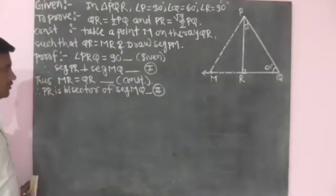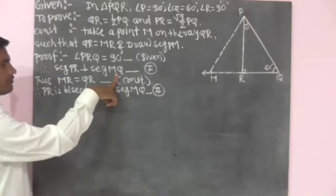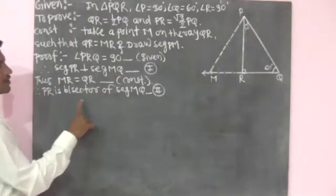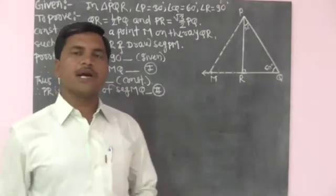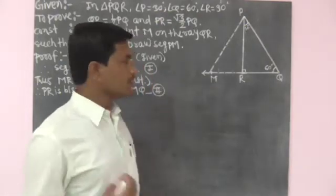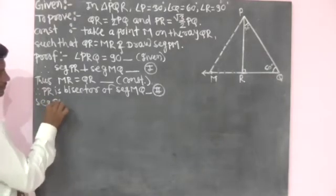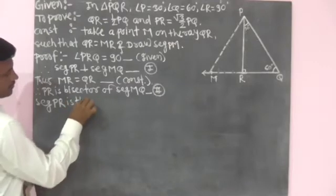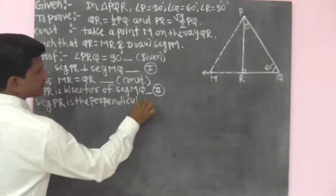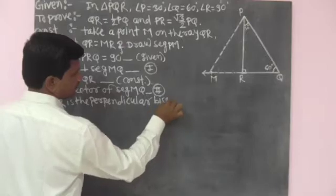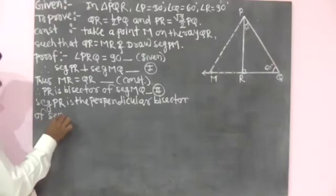Now look at equations 1 and 2 carefully. In equation 1, segment PR is perpendicular to segment MQ. In equation 2, segment PR is the bisector of segment MQ. From equations 1 and 2, segment PR is the perpendicular bisector of segment MQ.